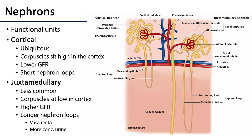The nephron is the functional unit of the kidney and there are two distinct types: cortical and juxtamedullary nephrons. Both are supplied by afferent arterioles coming off cortical radiate arteries. Arcuate arteries or interlobar arteries give off cortical radiate arteries, and we can see afferent arterioles branching off these into glomeruli.